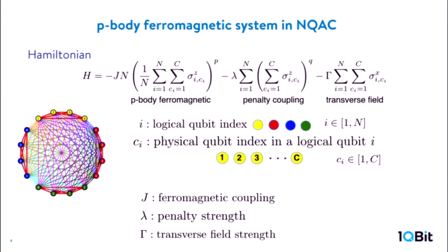We first consider the simplest model, which is a P-body ferromagnetic system. This is the physical Hamiltonian in nested quantum annealing correction. The first term: i represents a logical qubit index, and c represents a physical qubit within the logical qubit. We can have a larger number of physical qubits denoted as c. The second term is a penalty term with coupling strength lambda. A transverse field acts on each individual physical qubit with strength gamma.